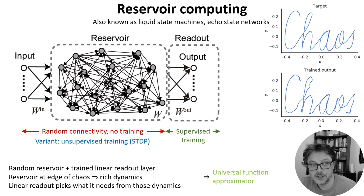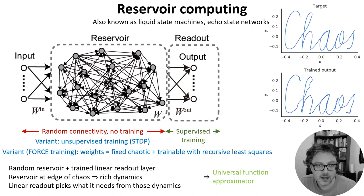There's lots of variants of this. For example with spiking neural networks you could add unsupervised training to the reservoir neurons using STDP. A particularly interesting variant is force training where you write the recurrent weights as a sum of a fixed term that induces chaos and a trainable term that can be trained with a recursive least squares algorithm.